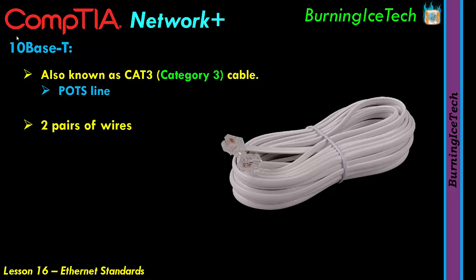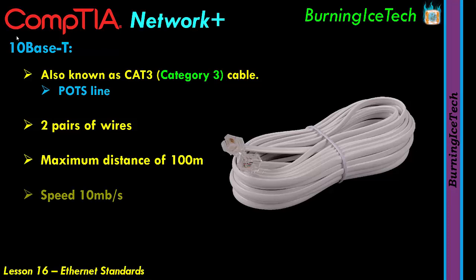These cables generally have two pairs of wires — that's what the books say — but realistically in some cases you'll find only two or three wires, not the full four. It depends on the company's phone setup. The maximum distance these cables can go is 100 meters, and the maximum speed is about 10 megabits per second, which was actually considered fast back in the 90s.